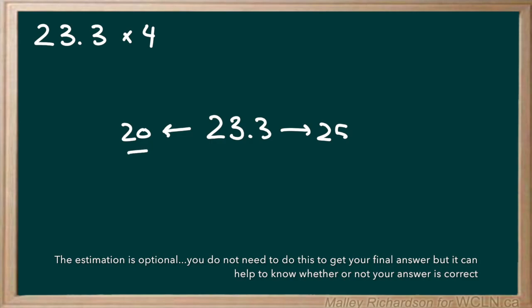Now we take our rounded down number and our rounded up number and we multiply it by 4. So first we take 20 times 4. Now to do this we just ignore the 0 and we continue with 2 times 4 which gives us 8 and then we bring down that 0 that we first ignored. So we're left with 80.